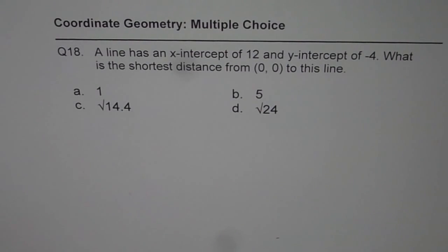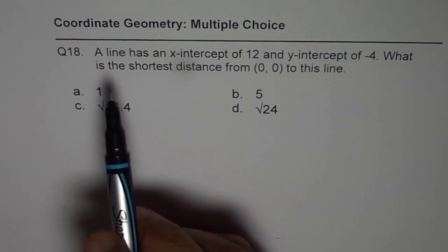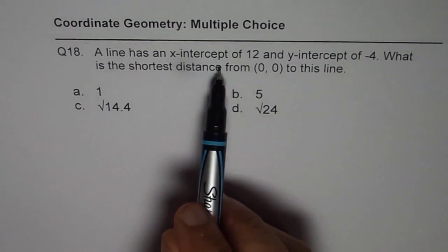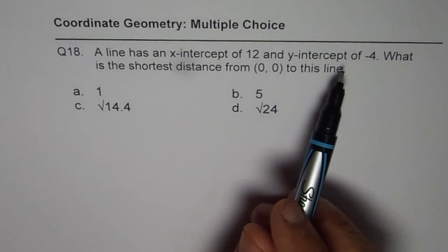I'm Anil Kumar and here is question number 18. Multiple choice coordinate geometry. A line has an x-intercept of 12 and y-intercept of minus 4.